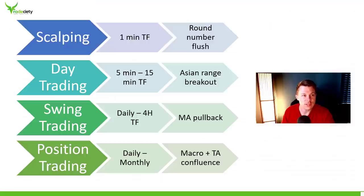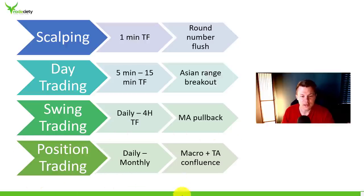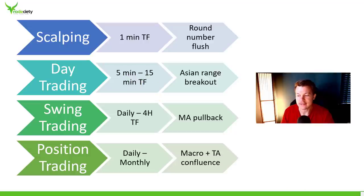And those are the four different main strategy types. Obviously there are gray areas in between, but I hope this gave you some idea. Generally, retail traders are somewhere in the day trading or swing trading range. Scalping very rarely works out, and position trading is also often very extreme — especially if you have a small account, buy and hold doesn't make too much sense. So usually the right answer is somewhere in the middle. I hope you enjoyed this video — let me know in the comments below, and I'll make more in the future. See you next time, thank you.